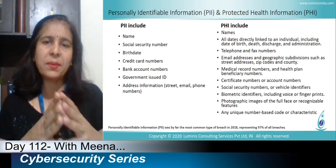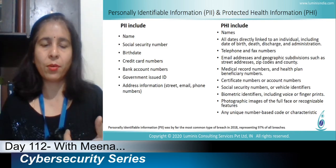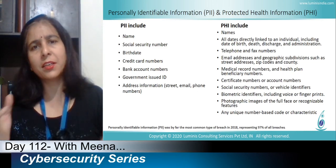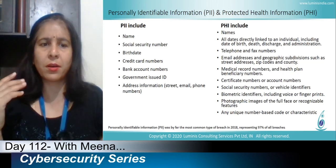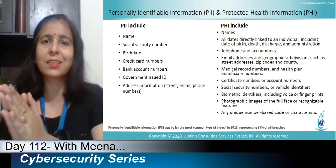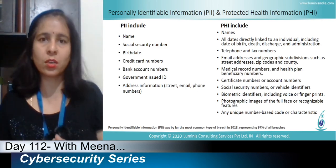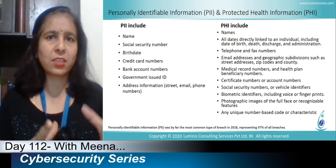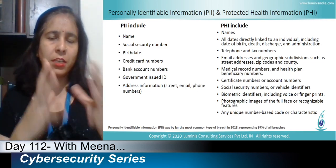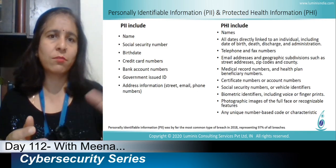PII information can include your name, date of birth, social security number, credit card details, address, contact numbers, email addresses — that information that is related to you. This is information you are using to have access to different assets, and it contains very critical details associated with your identity.